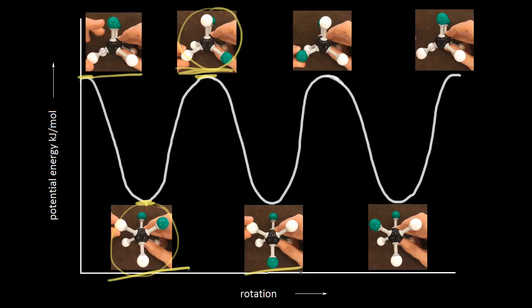Going from the eclipse to the staggered is a decrease in energy. Going from the staggered up to this eclipse is an increase in energy. Going from the eclipse down to the staggered again is a decrease, and finally back to the original eclipse conformation would be an increase in energy. Notice that all of our eclipse conformations here have the same potential energy — if I draw a line, this is all the same potential energy.